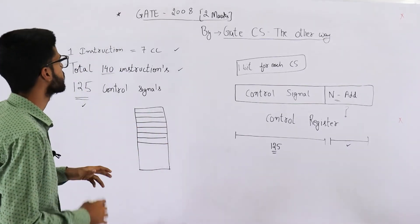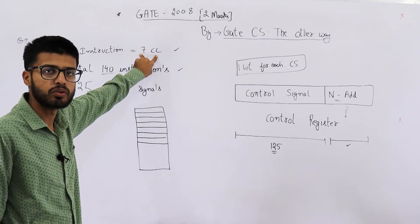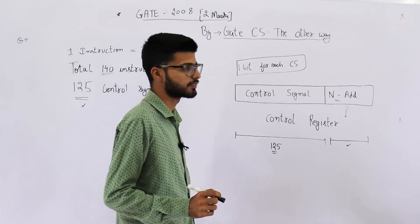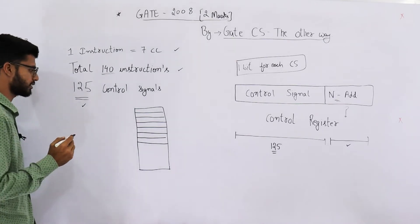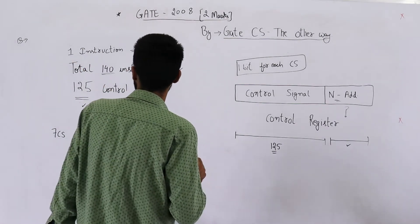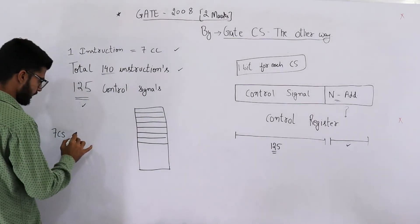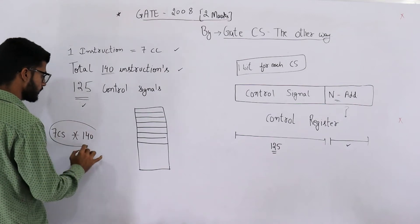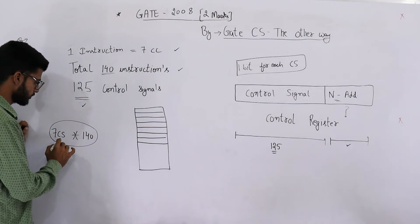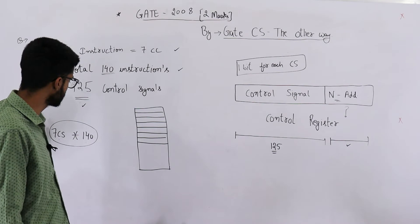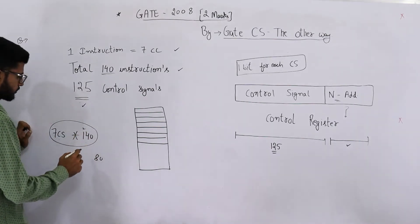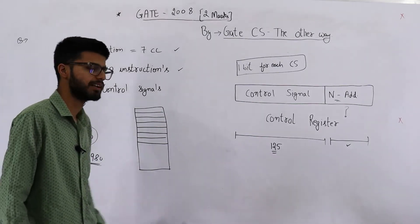So each instruction needs seven clock cycles and you know in every clock cycle we are performing some micro operation. That means in every clock cycle we need one control signal. That means each instruction needs seven control signals to get completely executed, one control signal for each clock cycle. And we have 140 total instructions. That means we have these many control signals in total that are to be saved in the control memory. Seven signals for each instruction, total becomes 140 into 7. This comes out to be 980 signals in total.